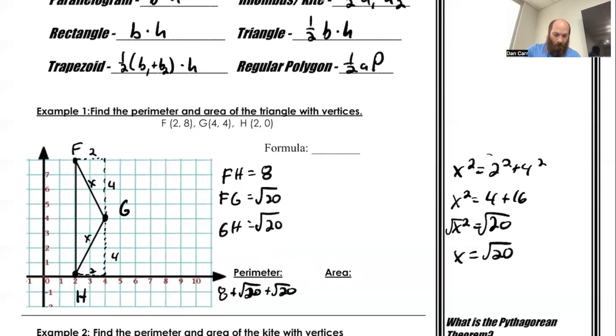So we've got the square root of 20. Square root of 20 plus square root of 20 plus 8. That comes out as a perimeter of 16.944. And because we're just dealing with a coordinate plane, we're going to call it units.